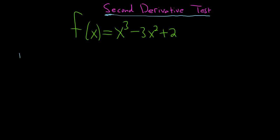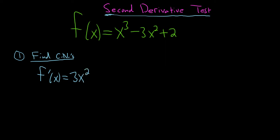The first step in the second derivative test is to find the critical numbers. So we take the derivative and set it equal to 0. Using the power rule, f prime of x equals 3x squared minus 6x. Critical numbers are where the derivative is undefined — which doesn't occur here since there are no fractions or square roots — or where it equals 0.